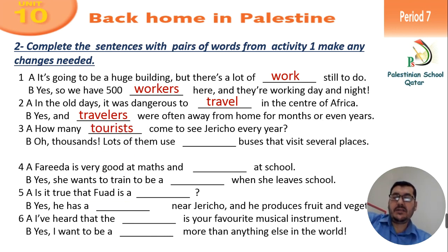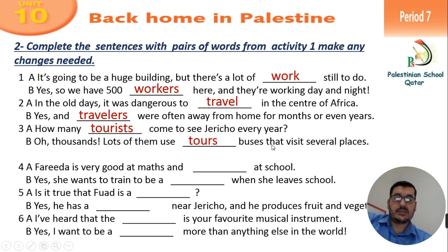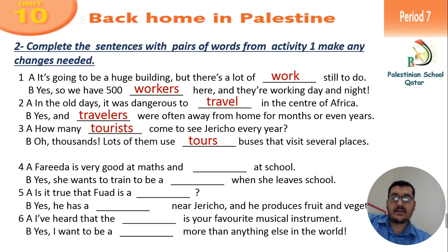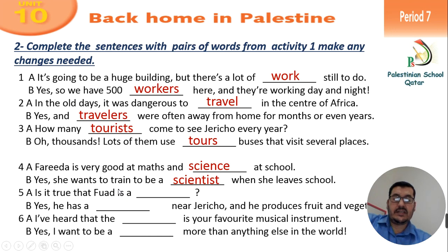Number three: How many tourists come to see Jericho every year? Oh — thousands. Look at them — lots of them. Lots of them use tour buses that visit several places. Number four: Farida is very good at maths and science at school. Yes, she wants to train to be a scientist when she leaves school.